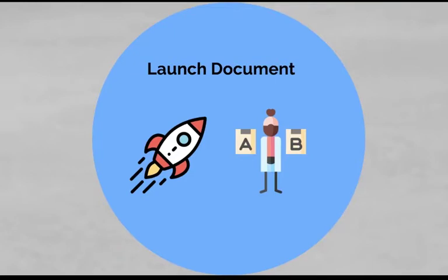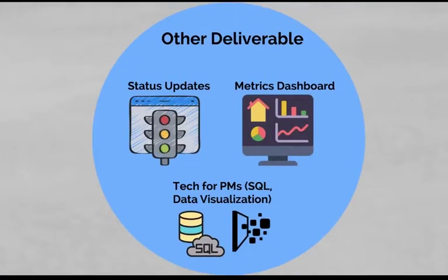Now let us talk about the other deliverables that the PM owns. In addition to creating documents, a PM also provides weekly or bi-weekly status updates to stakeholders for tracking progress closely. Besides this, the PM also maintains the project plan to track the milestones within the team. Additionally, the PM also works through resolving any blockers to keep the product lights green. A PM may also build a metrics dashboard in the absence of BIE or BA resources, similar to how a CEO of any company would jump in and wear multiple hats in the absence of headcount.